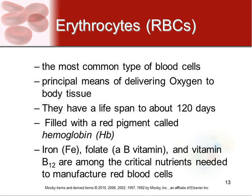Red blood cells, or erythrocytes, are the most common type of blood cell and the principal means of delivering oxygen to body tissues. They have a limited lifespan of only about 120 days. Red blood cells are filled with hemoglobin, which makes them red. They also contain iron, folate, and vitamin B12 — crucial nutrients for manufacturing red blood cells. If your diet lacks these nutrients, you won't produce good red blood cells and won't be able to oxygenate your tissues well.